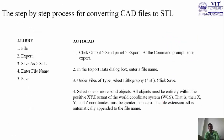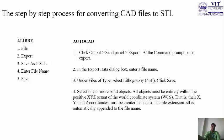The step-by-step process for converting a CAD file to STL for every software cannot be fully mentioned here; I have mentioned it in my reports. In the PPT I have mentioned 4 basic conversions from these softwares. In Alibre, go to File > Export, then Save As. Give the file format as STL, enter the file name, and click Save. That's it.